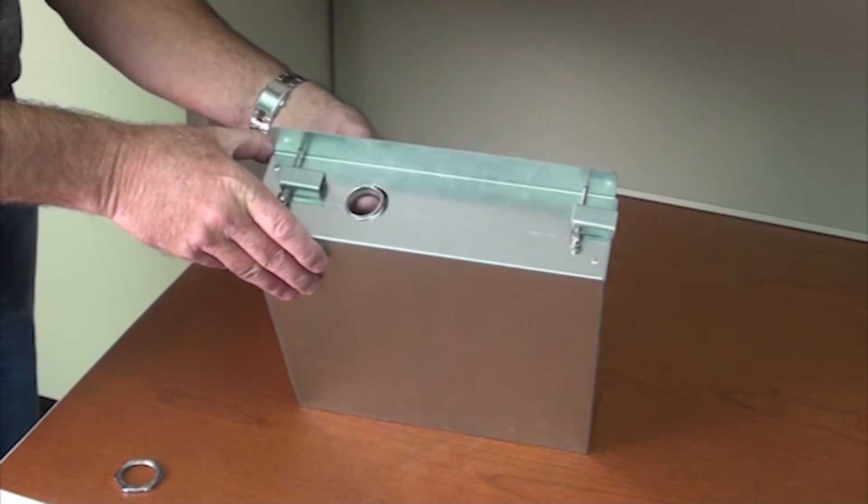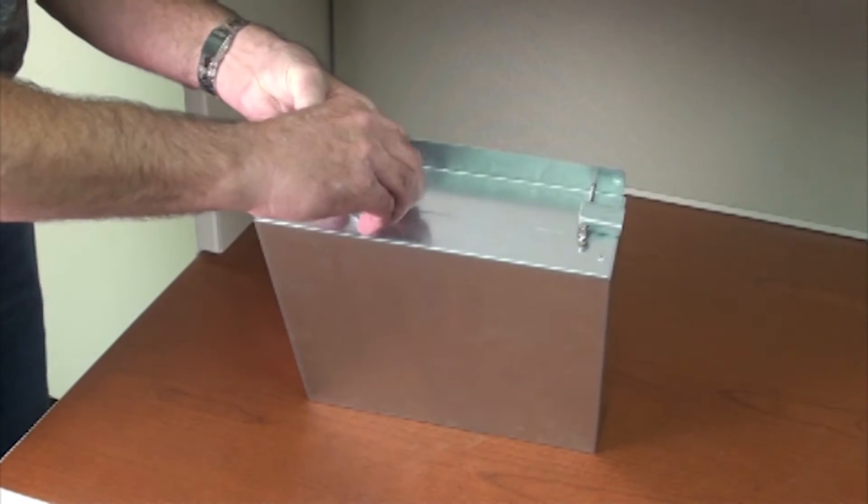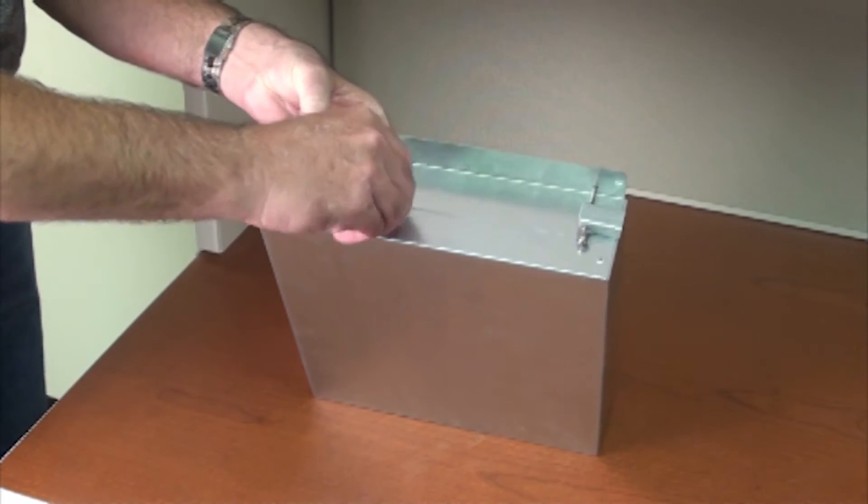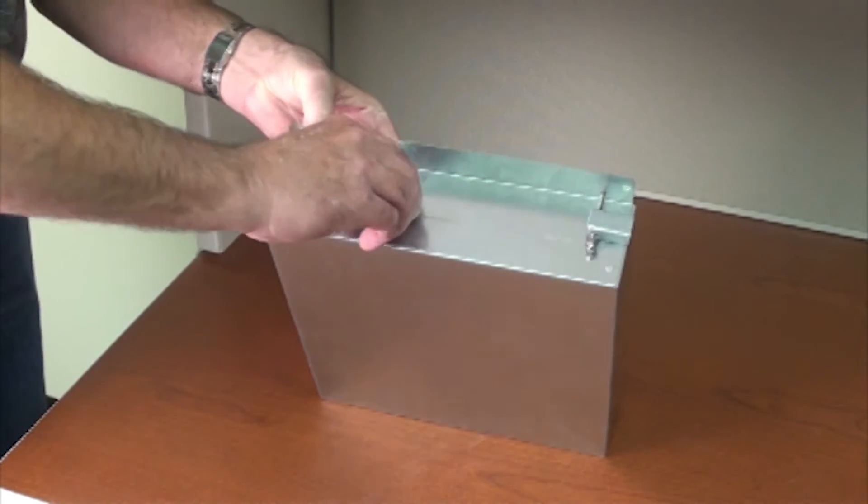Place the back box on the work surface. Remove one of the one inch knockouts on the side of the enclosure and install the one inch trade size conduit connector.